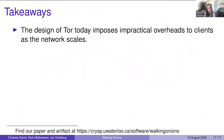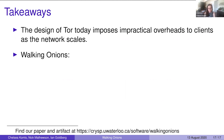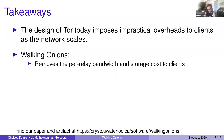The key takeaways: the design of TOR today imposes growing overheads to clients as the network scales, because all clients maintain the consensus and its size grows as new relays join. Walking Onions removes this per-relay bandwidth and storage overhead because clients no longer need to maintain the consensus locally — they only maintain a constant-size network parameters document — and they are able to verify the integrity of their path in a post hoc manner.